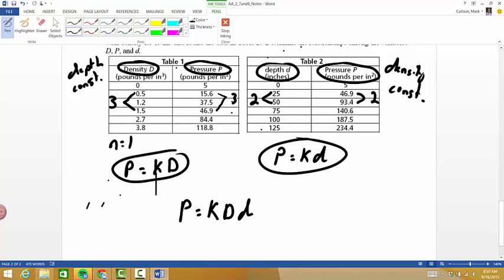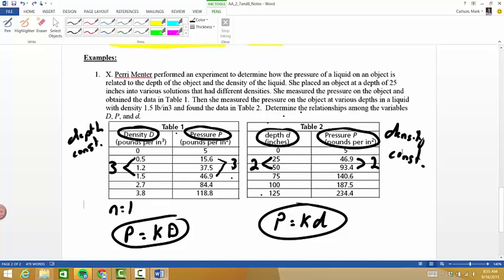Now I can find that constant of variation fairly easily because all I need to know is I need one ordered triple where I know what the pressure is, what the density is, and what the depth is. If I can do that, then I can find k. So let's see if we can go through and do that. All right, so I'm looking for a value of pressure, density, and depth so I can solve for k.